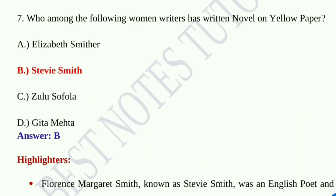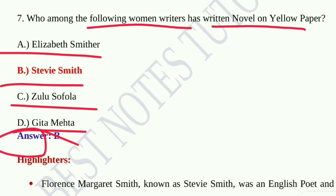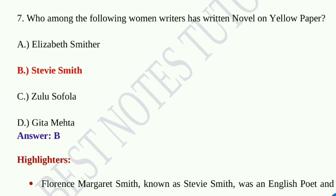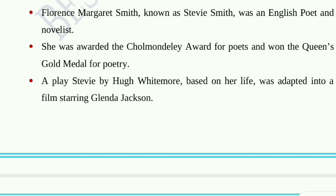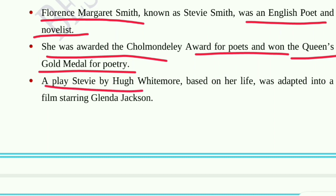Question number seven: Who among the following women writers has written Novel on Yellow Paper? Option A, Elizabeth Smither; option B, Stevie Smith; option C, Zulu Sofola; option D, Gita Mehta. Option B, Stevie Smith, is the correct answer. Stevie Smith's full name is Florence Margaret Smith; she was an English poet and novelist. She was awarded the Cholmondeley Award for Poets and won the Queen's Gold Medal for Poetry. A play, Stevie, by Hugh Whitemore based on her life was adapted into a film starring Glenda Jackson.